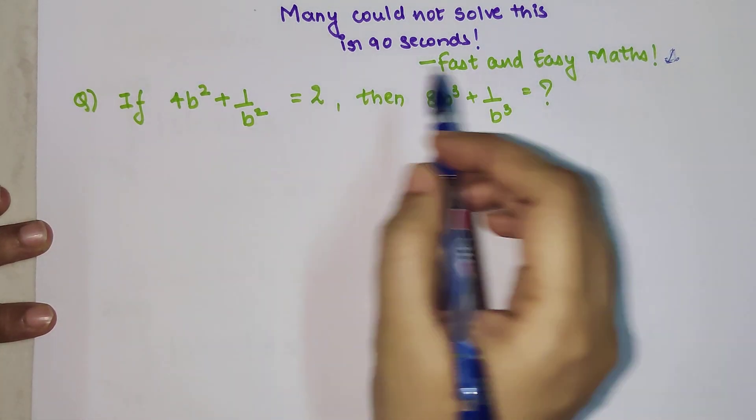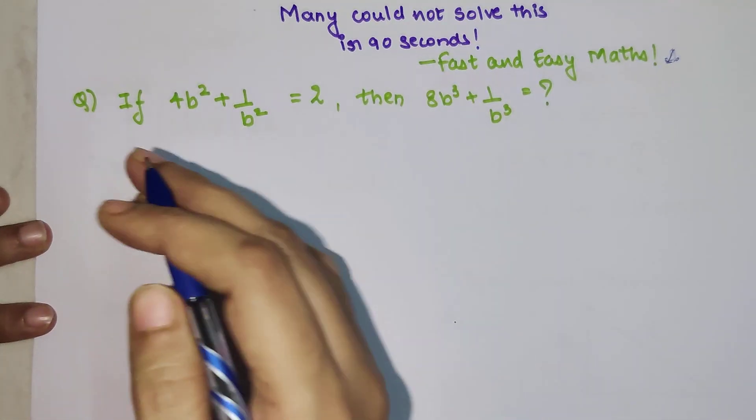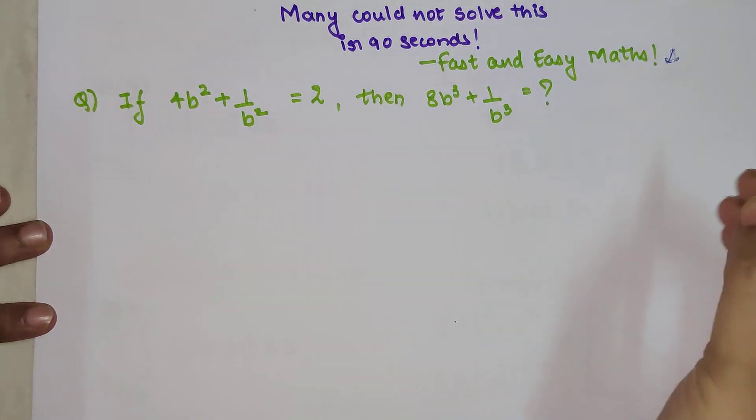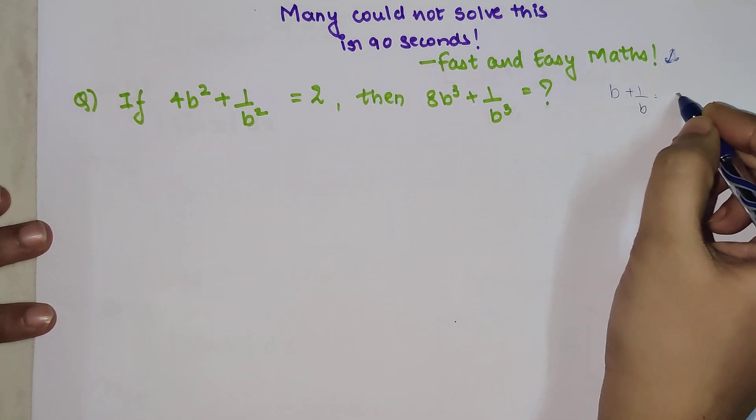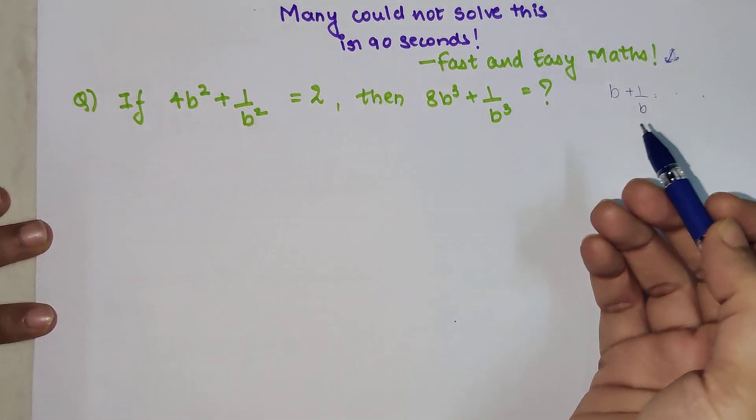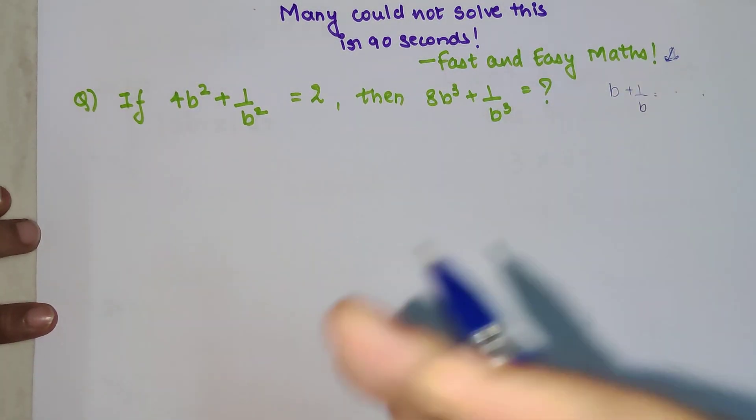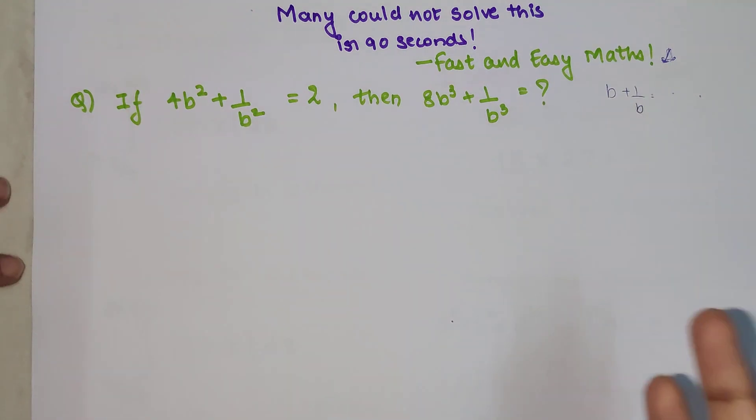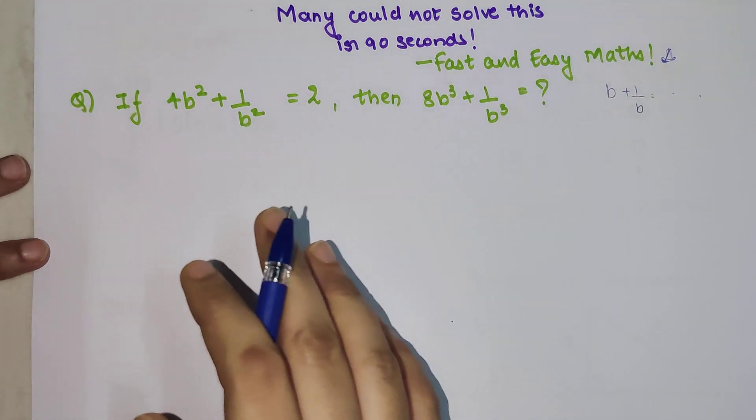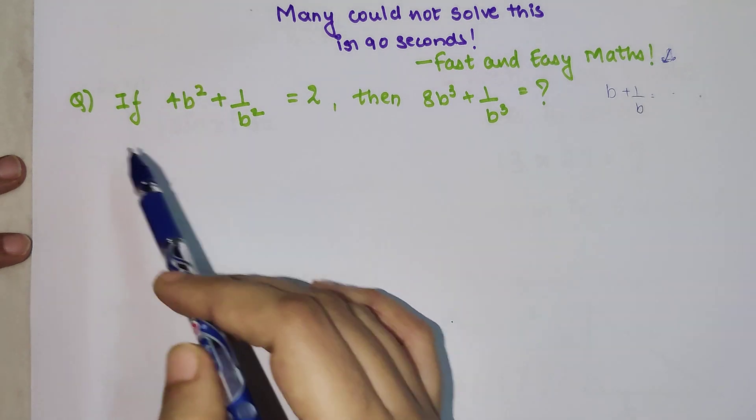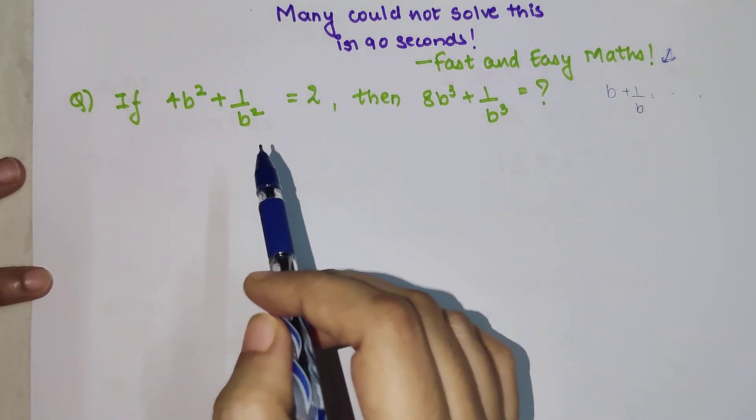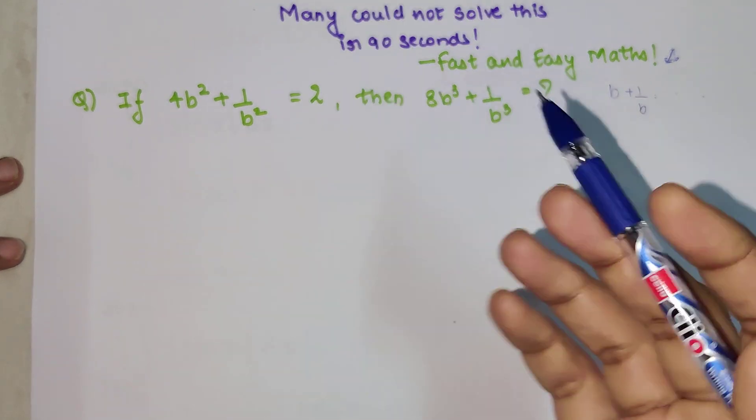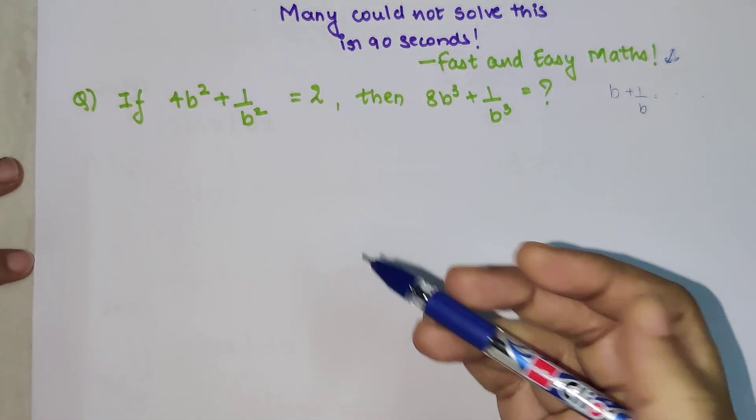In such a question, normally the kind of questions which we are expecting is like they have given you something like b + 1/b is equal to something, and then they ask you to find b³ or b raised to 4 or b raised to 5, b raised to 2, something like that. But here the problem is that the given data, they have given us 4b² + 1/b² and we need to find something which is like cubes. It is not even raised to 4.